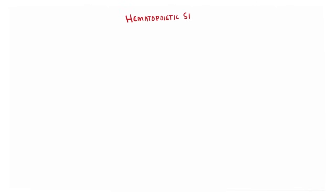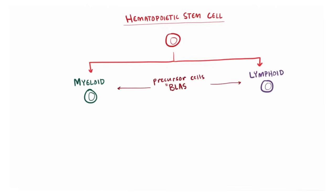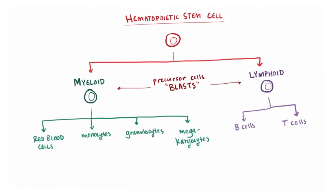So let's say that you've got this hematopoietic stem cell, and this guy's basically starting his choose-your-own-adventure game. It can choose to differentiate into a myeloid stem cell or a lymphoid stem cell — sometimes we just call these precursor cells blasts. If it goes the myeloid path, it can go on to be all sorts of specialized cells like red blood cells, monocytes, granulocytes, or megakaryocytes. Alternatively, it could choose the lymphoid stem cell route and go on to become B cells or T cells of the immune system.